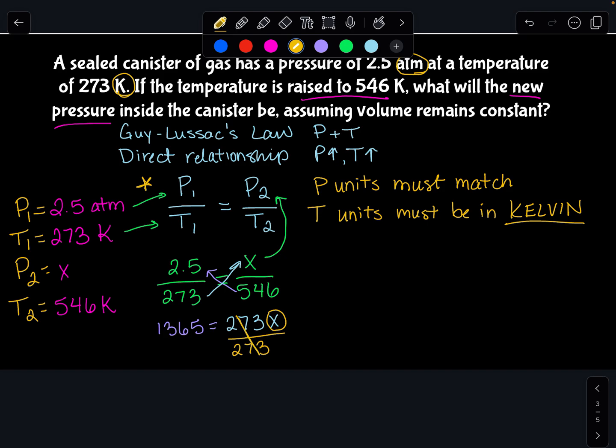Now, in algebra, whatever I do on the right side of my equation, I have to do on the left side. So now my equation looks like this: 1365 over 273 equals X. Solve for that, 1365 over 273 gets me 5.